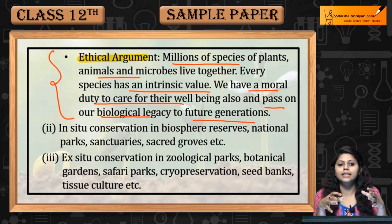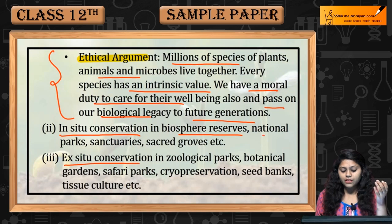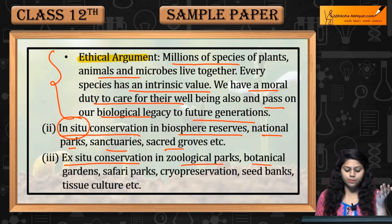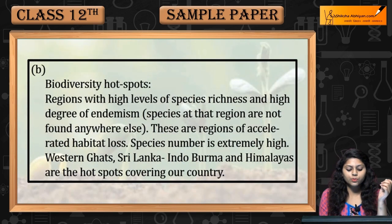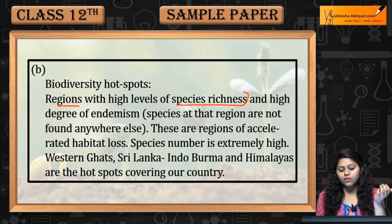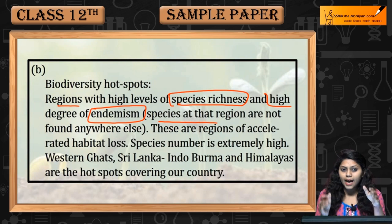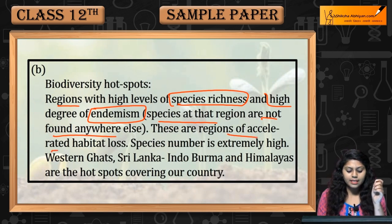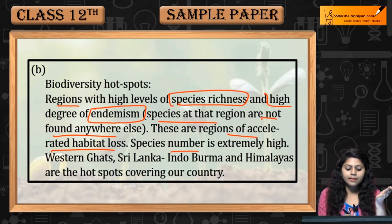In-situ conservation involves conserving species within their natural habitats. Biodiversity hotspots are regions of accelerated habitat loss where the species number is extremely high.